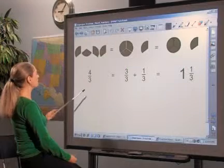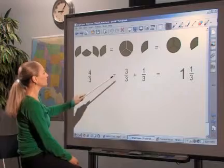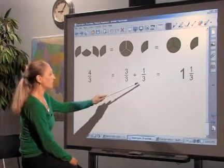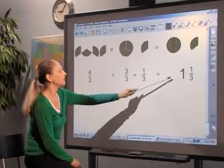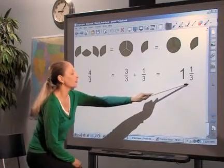Show them that four-thirds equals three-thirds plus one-third. Since three-thirds equals one, four-thirds equals one and one-third.